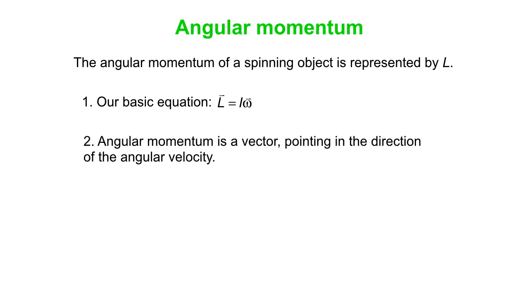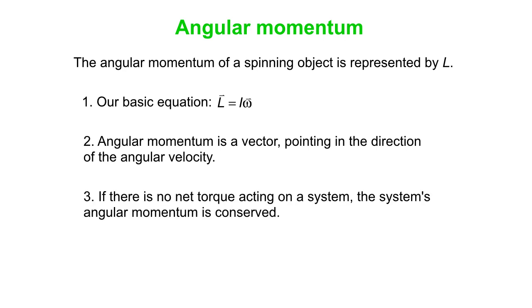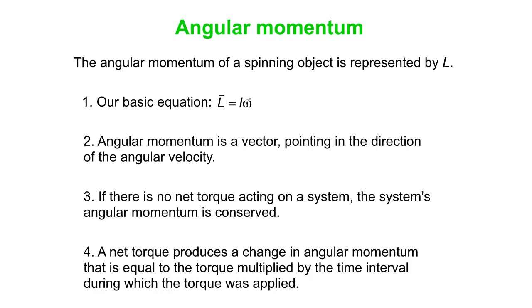Angular momentum is a vector. It points in the direction of the angular velocity. If there is no net torque acting on a system, then the system's angular momentum is conserved. But if there is a net torque, you get a change in angular momentum, and that is equal to the torque multiplied by the time interval during which the torque was applied.